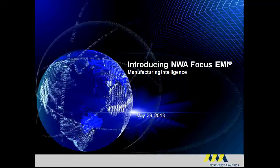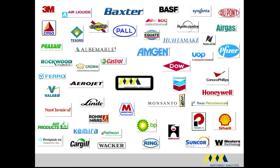Welcome to an overview of NWA's Focus EMI. Manufacturers are constantly looking for ways to improve plant efficiency and reduce the cost of goods sold. Many companies monitor real-time trend charts on the plant floor, but most tools only monitor one data source and are used only to notify operators when set specification or process limits are exceeded. This may help to avoid out-of-specification product, but does not provide the information needed for process improvement.